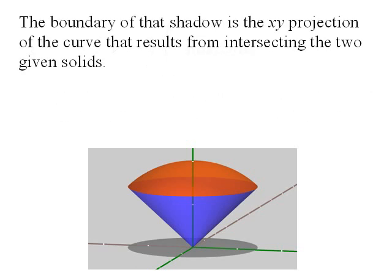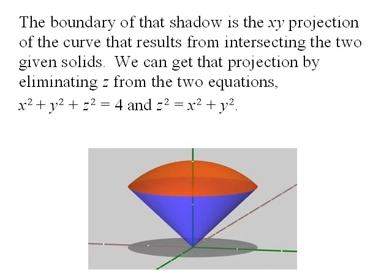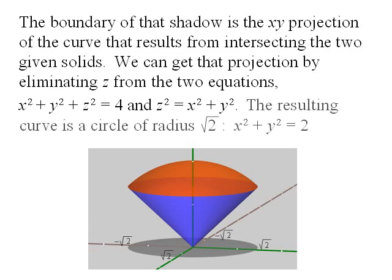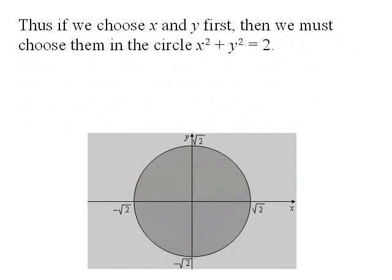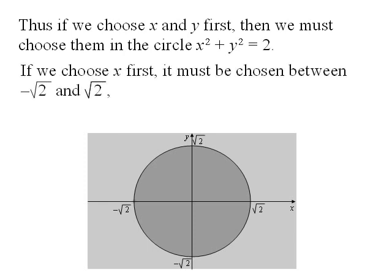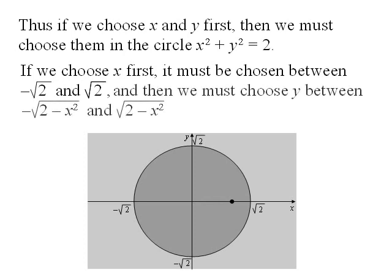The boundary of that shadow is the xy projection of the curve resulting from intersecting the two surfaces. We get that projection by eliminating z from the two equations x squared plus y squared plus z squared equals 4 and z squared equals x squared plus y squared. The resulting curve is a circle of radius square root of 2: x squared plus y squared equals 2. Thus if we choose x and y first, they must be chosen in the circle x squared plus y squared equals 2. If we choose x first, it must be between negative square root of 2 and positive square root of 2. Then y must be chosen between negative square root of 2 minus x squared and positive square root of 2 minus x squared, the endpoints of the chord of the circle at position x.